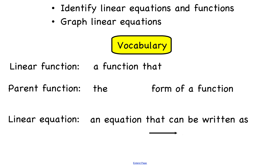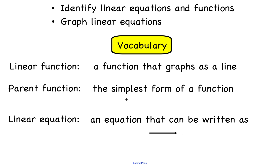As is usually the case with the first section of any new unit, we have some new vocabulary to talk about. The first thing is a linear function — a linear function is just a function that graphs as a line. Keep in mind that a function says any element in the domain can only go to one place in the range. The parent function — that's a new term — is just the simplest form of a function. For a linear function, our parent function is f(x) = x, which is the same as y = x.